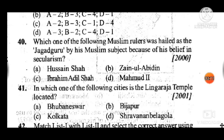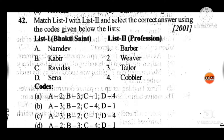Question 41: In which one of the following cities is the Lingaraja temple located? Answer is A, Bhubaneswar. Question 42 is a match-list question matching Bhakti saints and professions. Answer is B: Namdev was a tailor; Kabir's profession was weaver; Ravidas was a cobbler; Sena's profession was a barber.